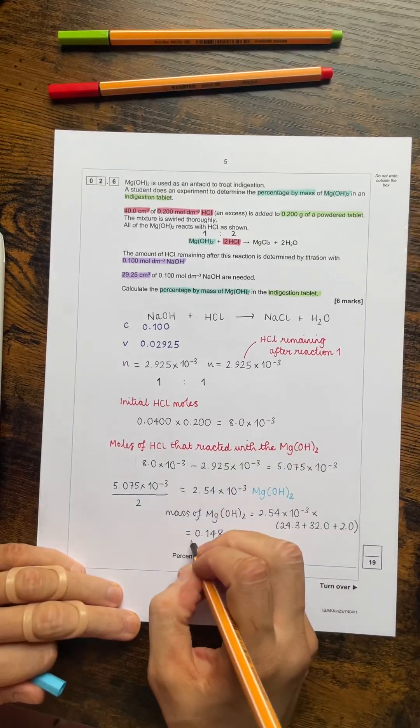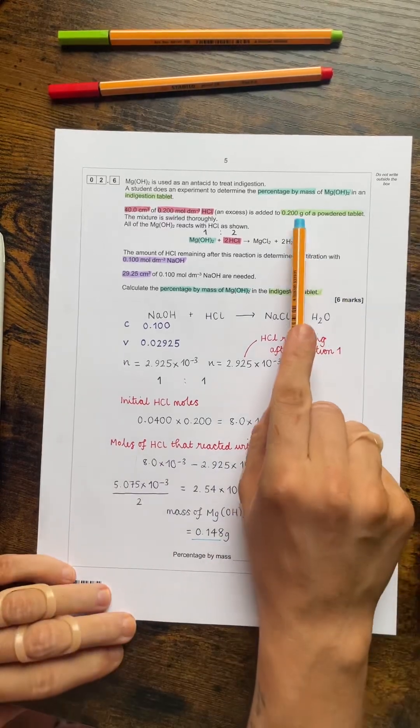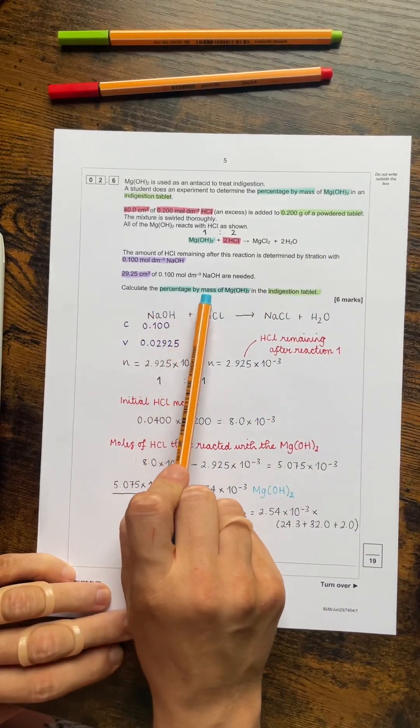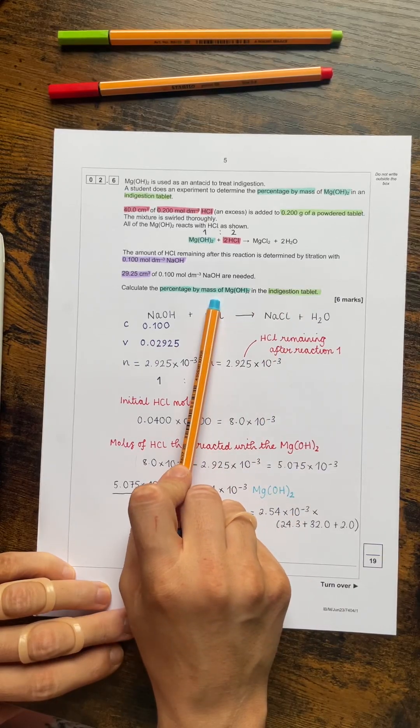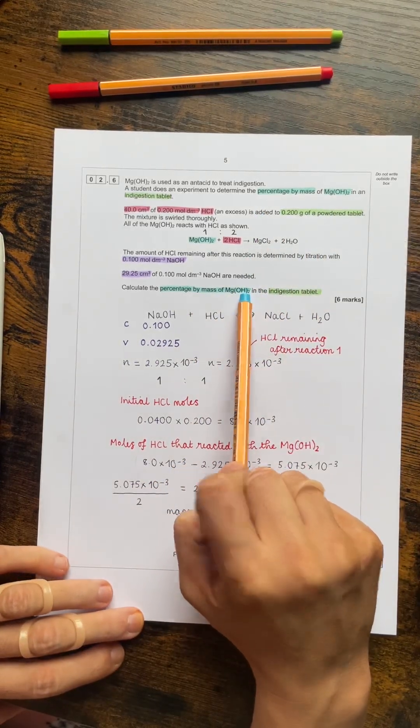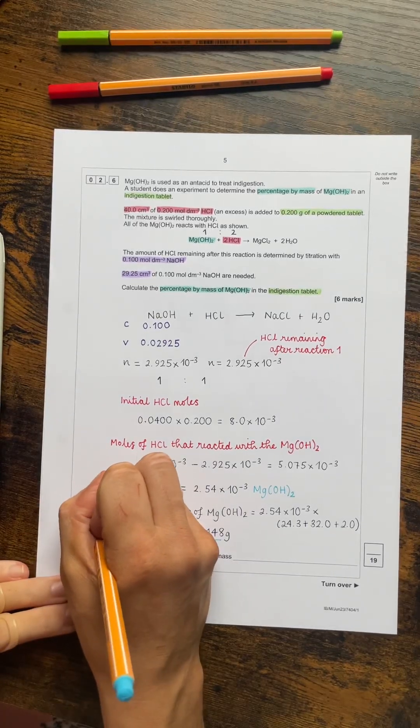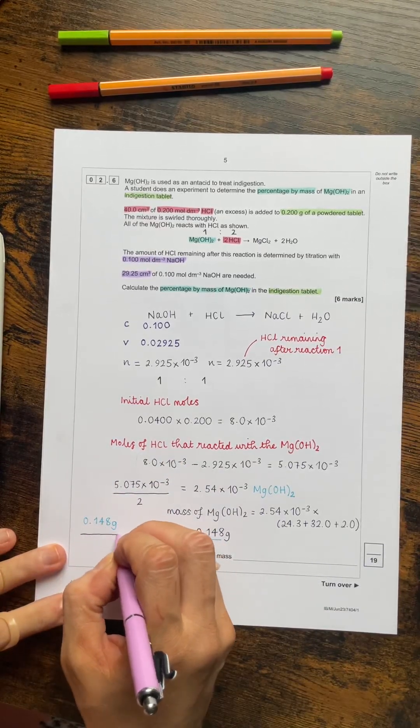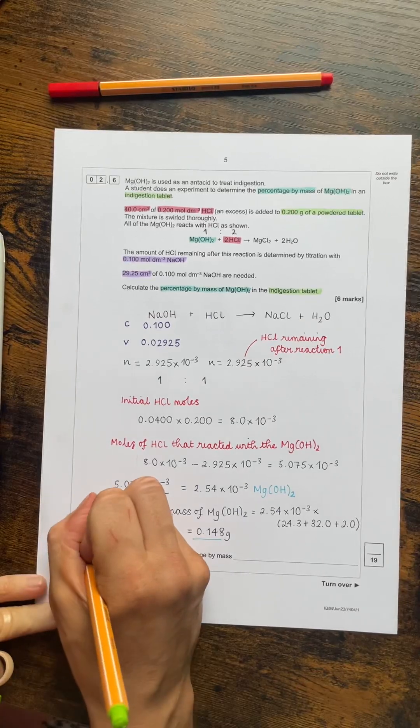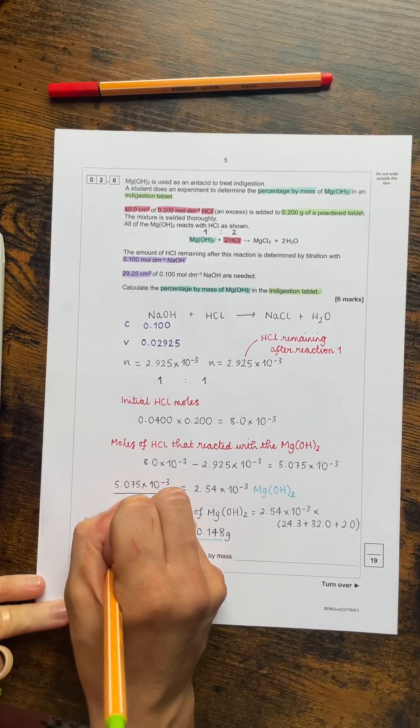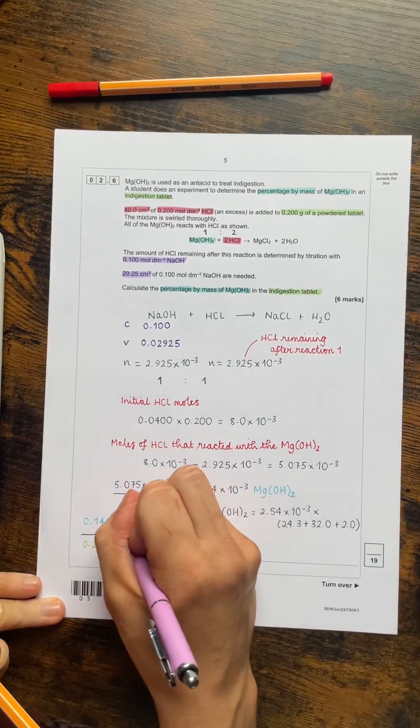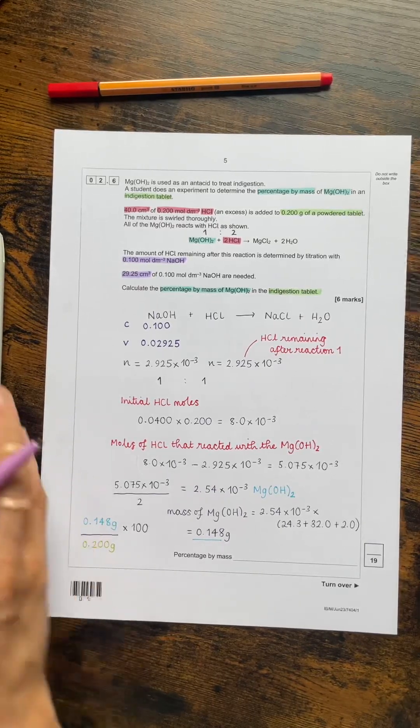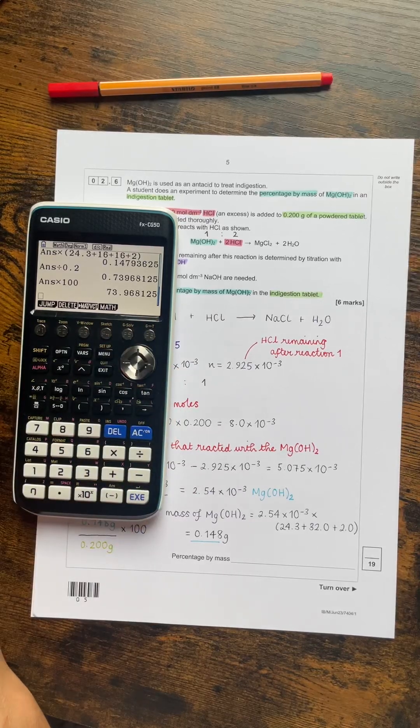So that's the mass of the magnesium hydroxide. And as we can see, the mass of the powdered tablet was 0.2 grams. So to calculate the percentage by mass of the magnesium hydroxide in the tablet, we basically want to know what percentage of the tablet is magnesium hydroxide. So we would then be doing the 0.148 grams that we just worked out for the mass of the magnesium hydroxide. And we'll be dividing that by the mass of the powdered tablet. And then to get percentage by mass, timesing by 100. And that gives me that answer there, 73.968125.